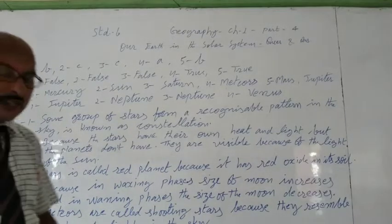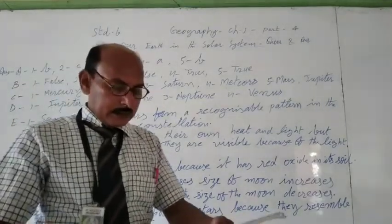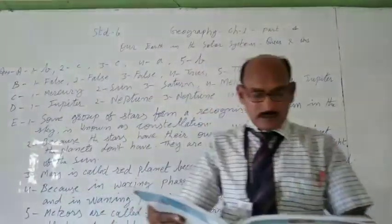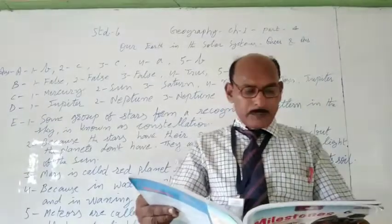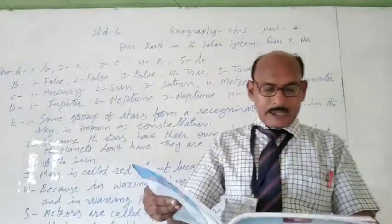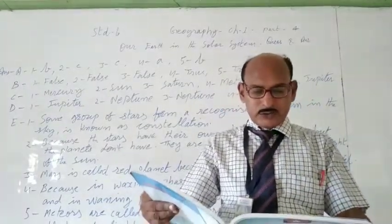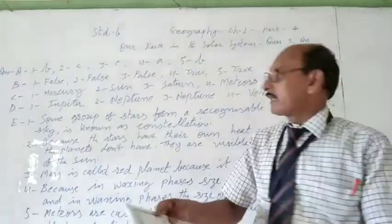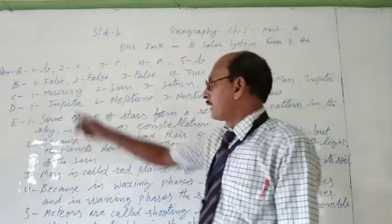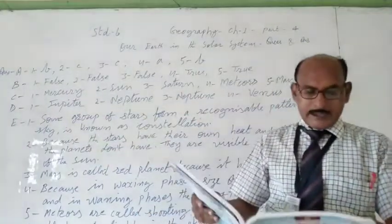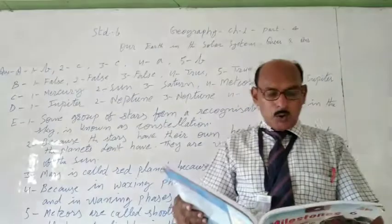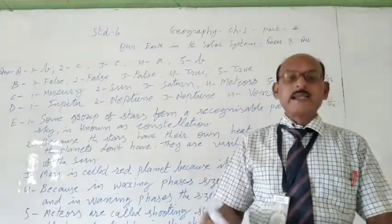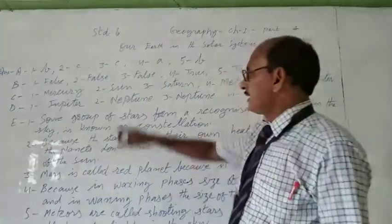Now C, fill in the blanks. First is the planet nearest to the sun with the shortest orbit. The answer is Mercury. Second, the sun was formed about 4.6 billion years ago. The answer is sun.